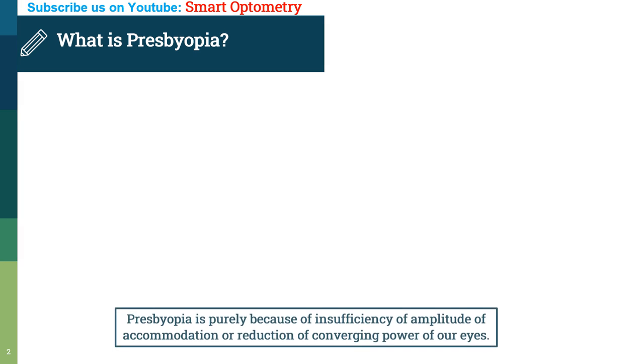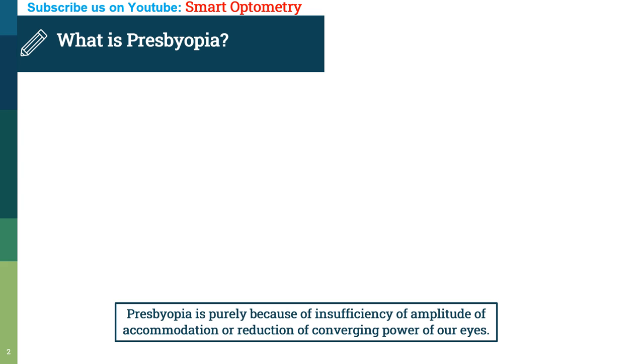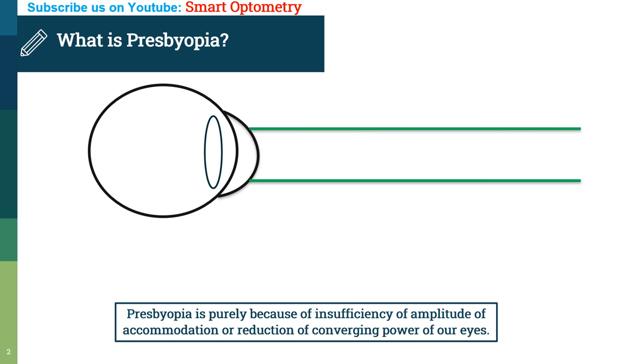What is presbyopia? Presbyopia is purely because of insufficiency of amplitude of accommodation or reduction of converging power of our eyes, due to which the light rays coming from infinity focus behind the retina.